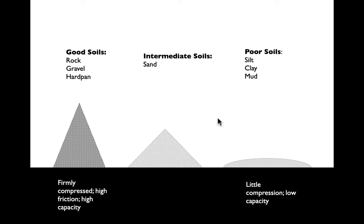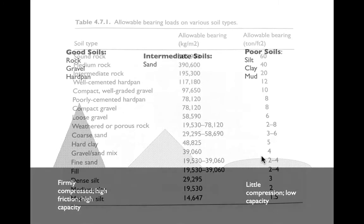Somewhere in the middle we get sand, which can be good or poor depending on how much water it contains and what the particles look like. The slump test gives us pseudo-laboratory conditions that tell us how the soil will behave under load — we want it to hold its shape, not flow and spread out.